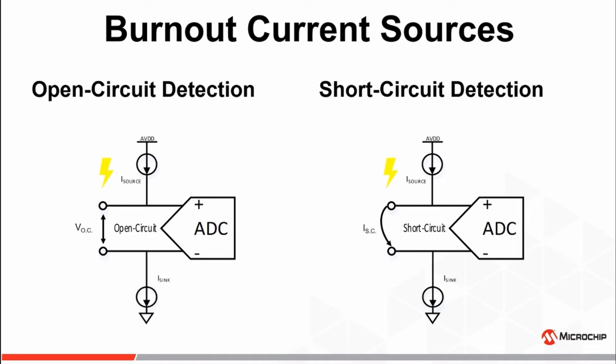Therefore, the voltage seen across the ADC inputs is the full-scale differential input voltage and results in a positive saturated output code of 8,388,607. However, if a short circuit condition were to exist across the VIN-plus and VIN-minus inputs, the differential voltage seen across the ADC would effectively become zero and therefore result in an output code of zero as well.